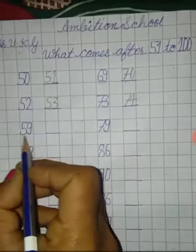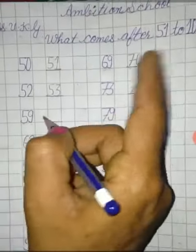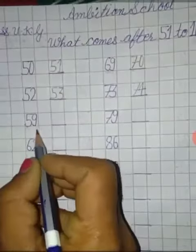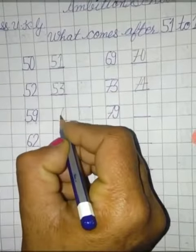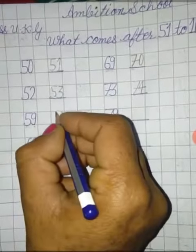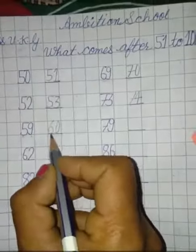Is ternas next? 5, 9, 59. So, jasse 6, 9 ka kiya, hamne. Isi ternas e ye karin gya. 5, 9, 59. 9 after? 0. And what comes after 5? 6. Kya ban gya? 6, 0, 60.